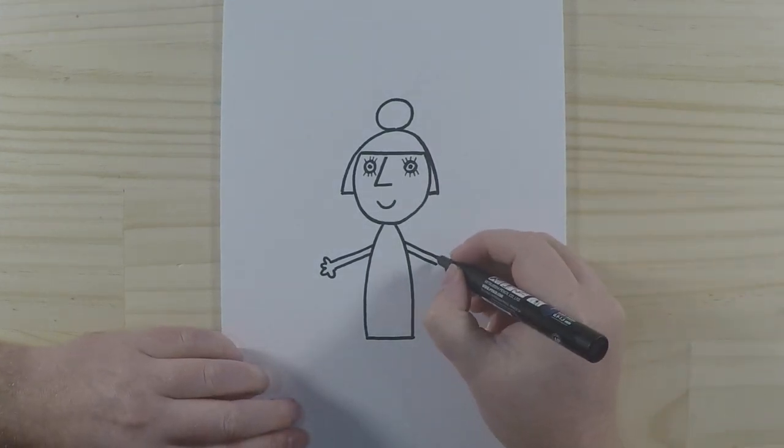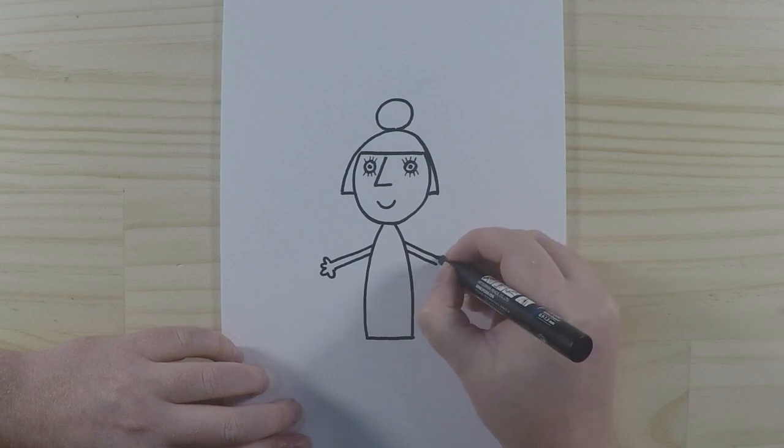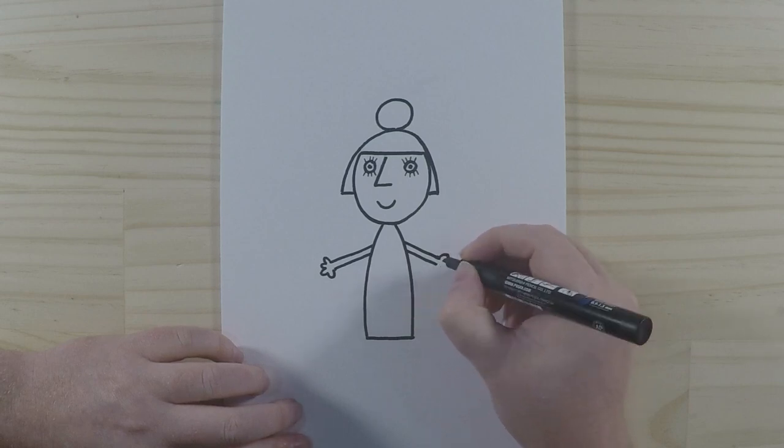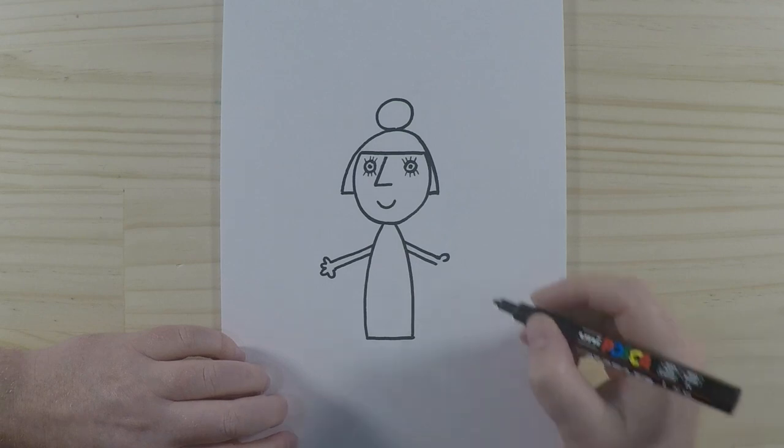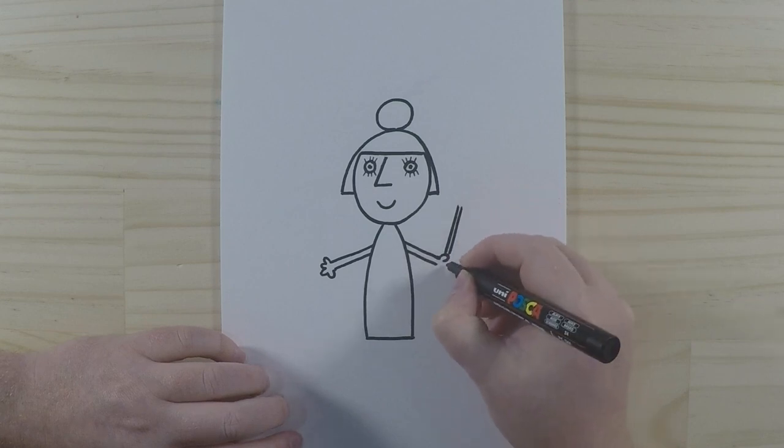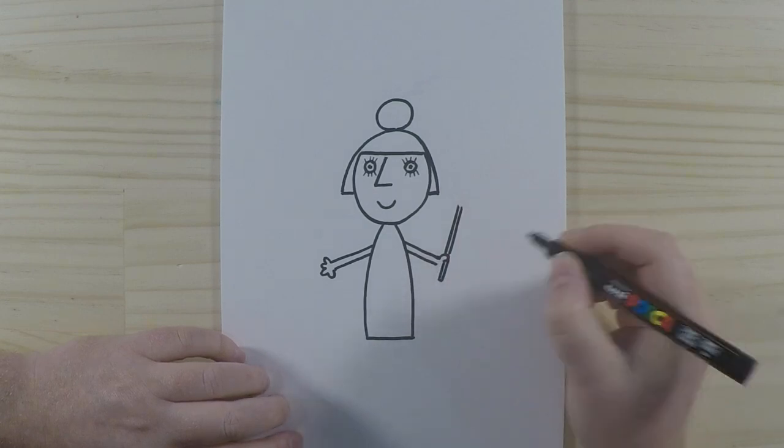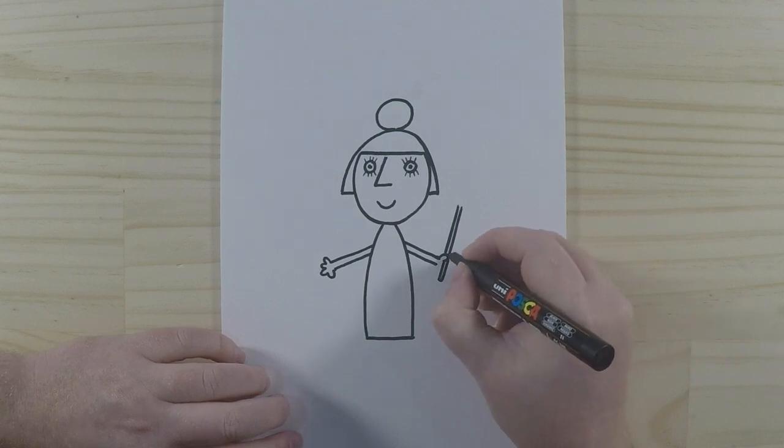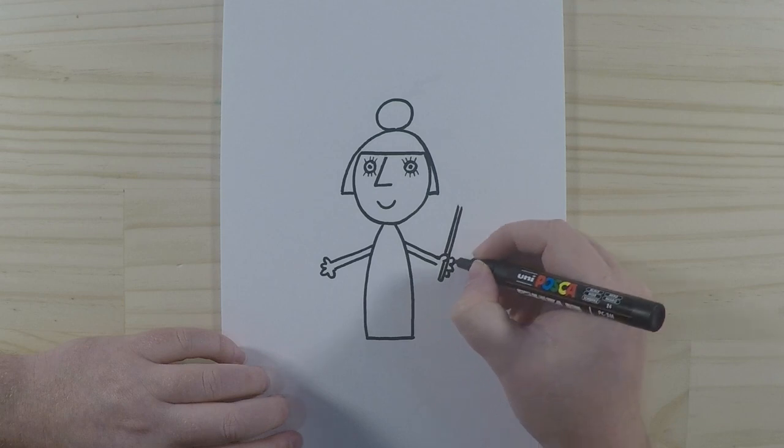Now in this hand she'll be holding her magic wand. So what we're going to do first is just draw one finger, which is her thumb, like this. And then we're going to draw another straight line just like this, going behind it. And then you can draw the rest of her fingers behind the wand, so we've got one, two, three, just like that.